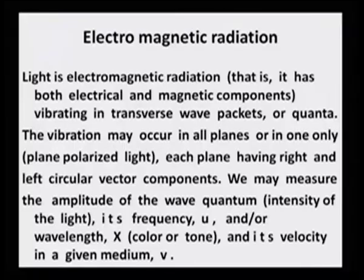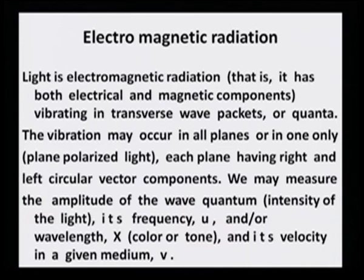Electromagnetic radiation, that is light, has both electrical and magnetic components vibrating in transverse wave packets or quanta. The vibration may occur in all planes or in one only — plane polarized light — each plane having right and left circular vector components. We may measure the amplitude of the wave quantum, that is the intensity of the light, its frequency and/or its wavelength, and then look at the color tone and its velocity in a given medium. All this will now be related to what color will be observed or seen.